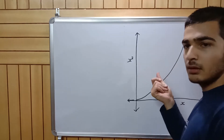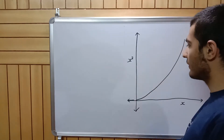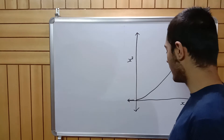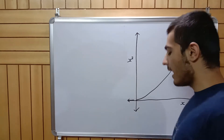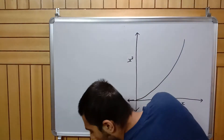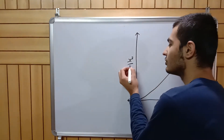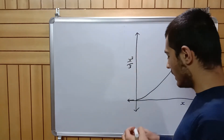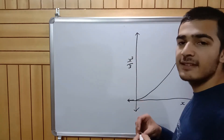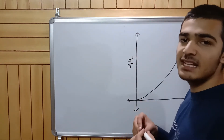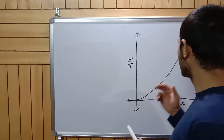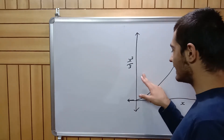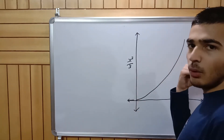This is the graph of x cubed versus x. If I divide this by 3 and plot x cubed by 3 versus x, the whole graph gets less deep by a factor of 3. We can clearly see that effect here.